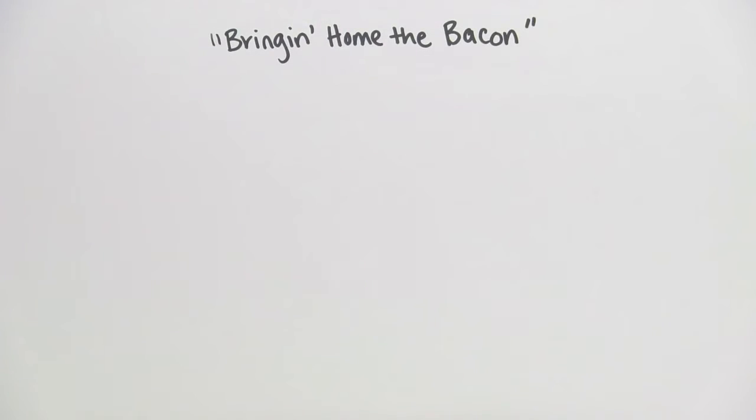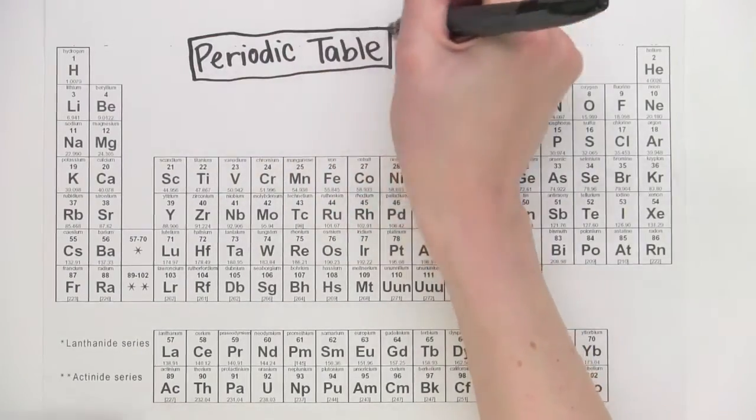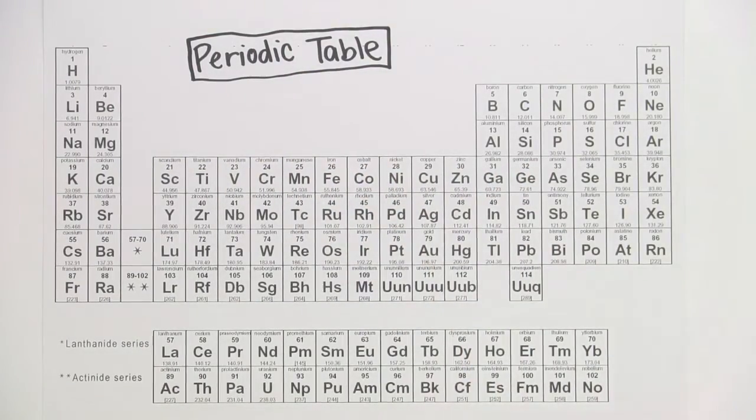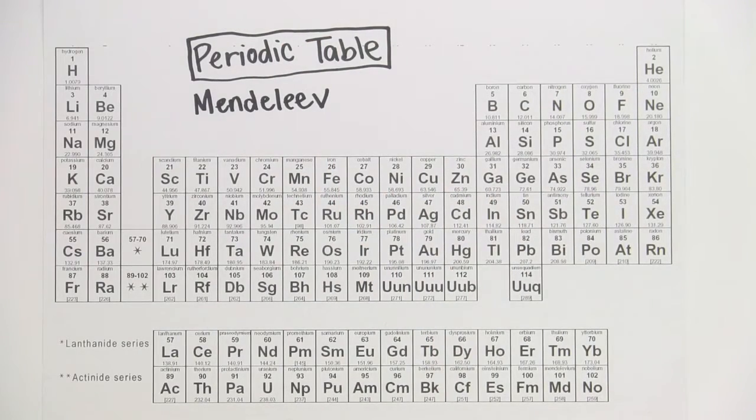Now before we get cooking, let's take a look at the chemist's best friend. This is the periodic table. It was created in 1869 by the Russian chemist Dmitry Mendeleev, back when only 65 elements were known.